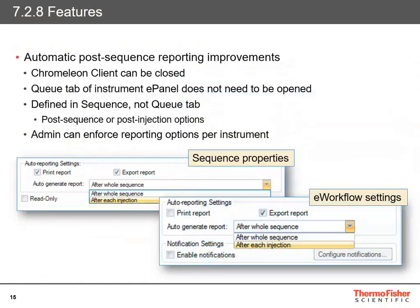Finally, there are several improvements to post-sequence reporting options. Before Chromeleon 7.2.8, to automatically generate a report at the end of an injection or sequence, the user had to set up options in the instrument queue tab and leave the Chromeleon client open until all reports were printed or produced. This release introduces significant improvements: you no longer need to go to the instrument queue to set up reporting, and reporting is performed even with the Chromeleon client closed. Post-injection and post-sequence report options are now defined in the sequence, meaning they can be predefined in an e-workflow, selected before acquisition starts, or edited while the sequence is running. System administrators can also enforce reporting options in the instrument configuration application, on the queue settings tab of the instrument properties, and these options will be applied to all sequences acquired on that instrument.